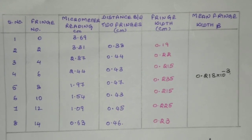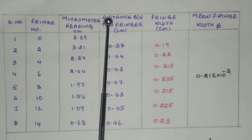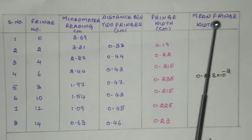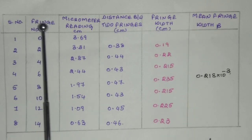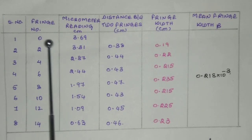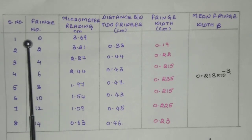Now the readings are tabulated as shown in this tabular column. This table consists of serial number or observation number, fringe number, micrometer reading, distance between two fringes, fringe width, and mean fringe width beta. First, where it is focused is taken as the reference fringe or 0th fringe.